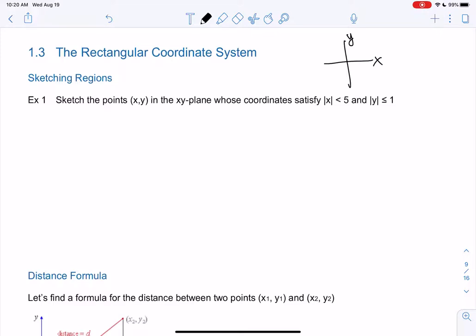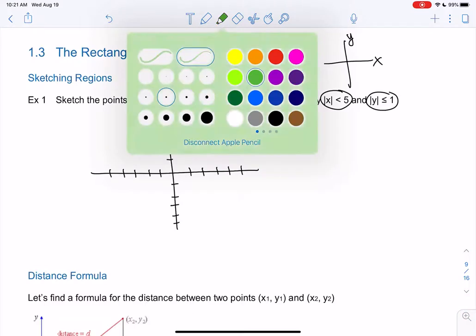So let's go back to those absolute values. Let's sketch the region whose coordinates satisfy the absolute value of X is less than 5 and the absolute value of Y is less than or equal to 1. So I'm going to do those in two different colors and then combine them. Let's do green for X.